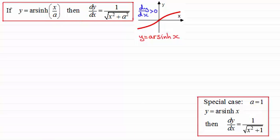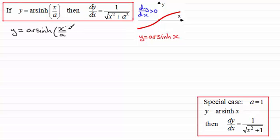Now, you might be called upon to prove a result like this, so I'll show you how we do it. If we take what we're given — that is y equals the inverse sine of x divided by a — then what I'm going to do is make x the subject. Taking sinh of both sides, we get: sinh of y equals x divided by a.